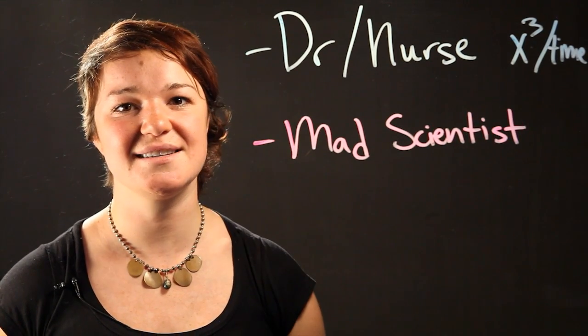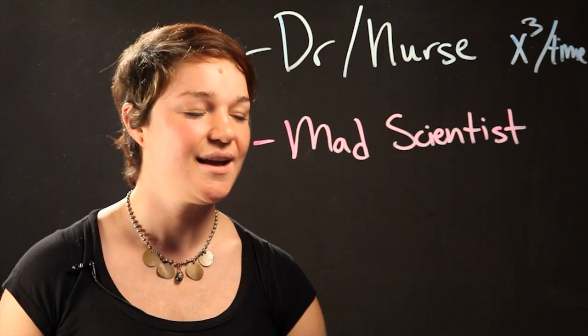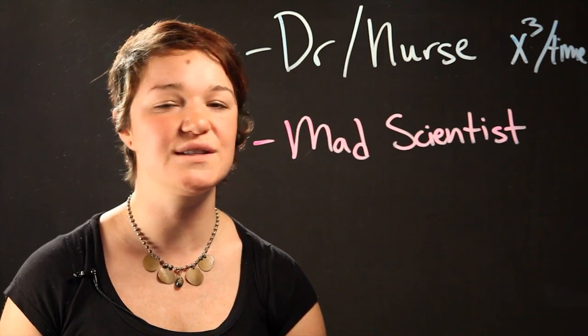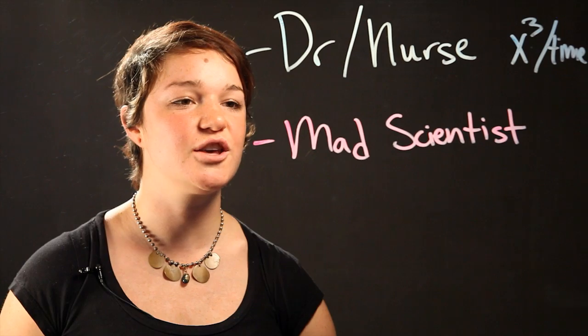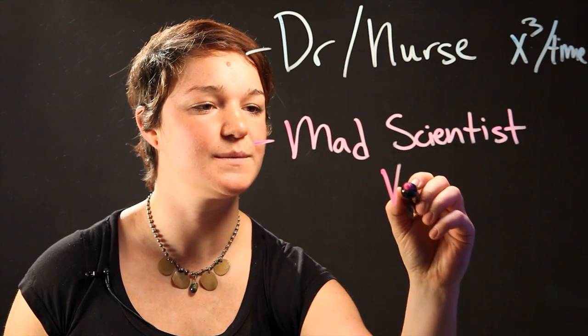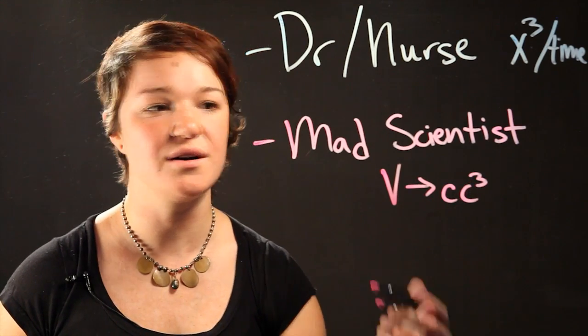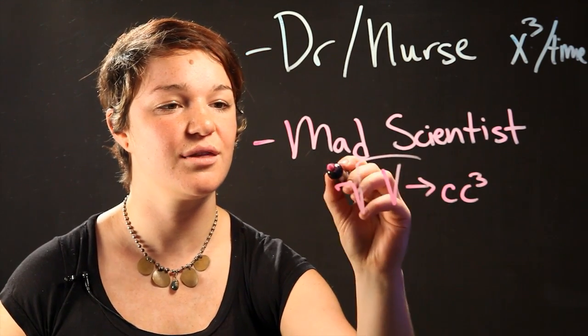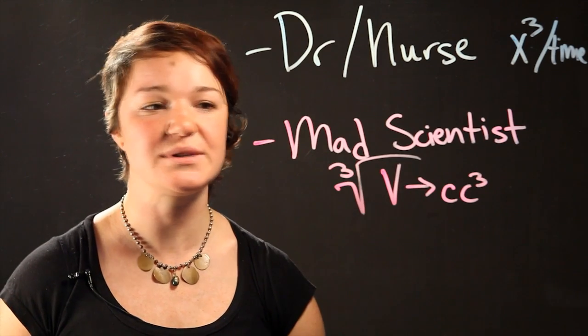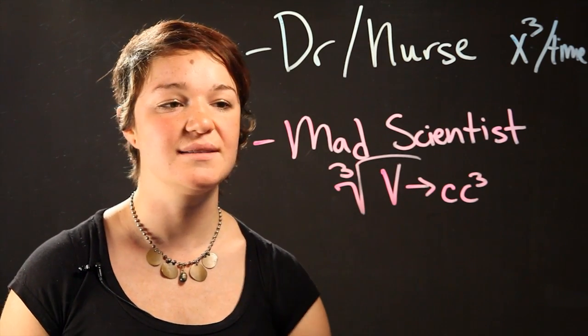Now I'm sure that mad scientists use their brains to solve radicals and polynomials all day. An example here also would be to figure out the volume of a fluid. The volume is given in terms of let's say cc's cubed. So here also you would have to take the third, the cubic root of the volume in order to figure out the cc's.